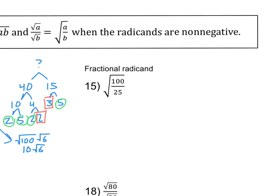15 is another case where we have two options. Since I know that 100 divided by 25 is 4, I'm simply going to simplify the fraction to 4. So I have the square root of 4, which is just 2. If I had chosen to separate this into the square root of 100 over the square root of 25, I would have gotten 10 over 5, which is also 2.